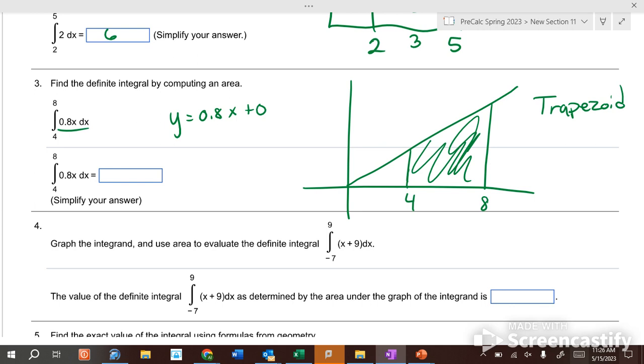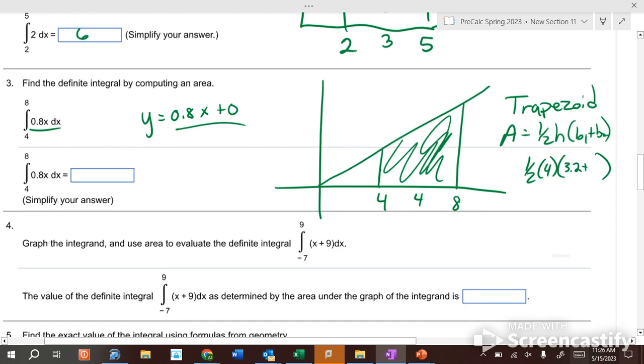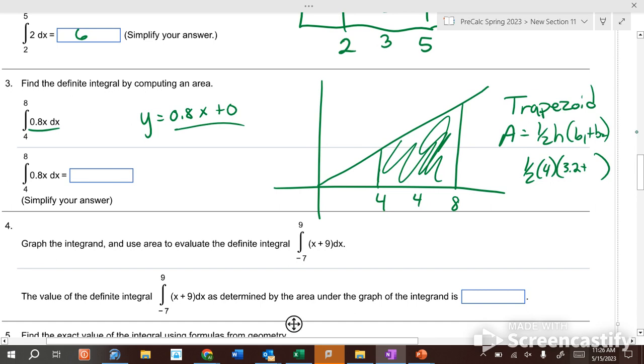It's a trapezoid because it has two sides that are parallel to each other and two non-parallel sides. How do you find the area of a trapezoid? It's one half the height times base one plus base two. The height is four. If we put four into this function, we get 3.2. If we put eight in, we get 6.4. Add them up to get 9.6. Half of four is two, two times 9.6 is 19.2. That's the area under the curve.